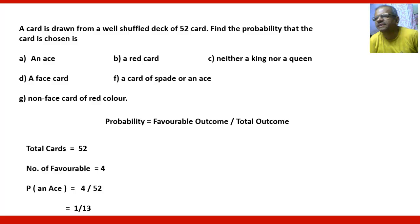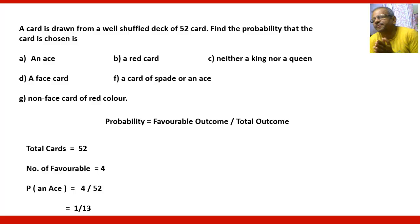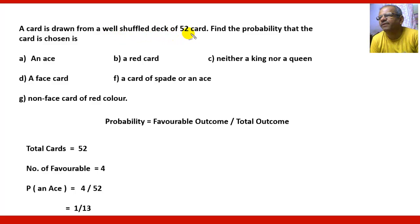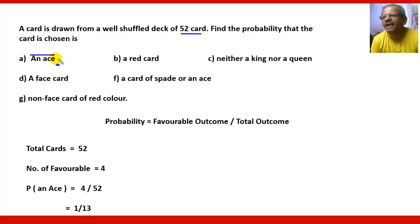Welcome to Abhivakti India's Future Classroom. Here is a question from probability related to the deck of 52 cards. A card is drawn from a well-shuffled deck of 52 cards — as we all know there are 52 cards in all. Find the probability that the card chosen is an ace.